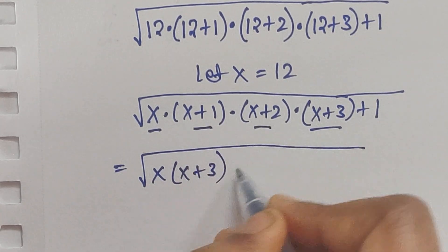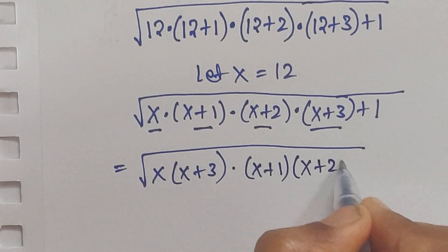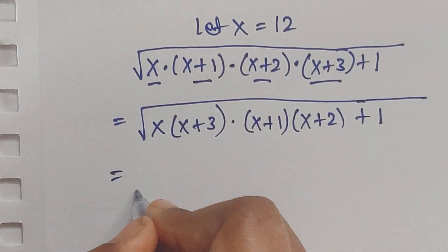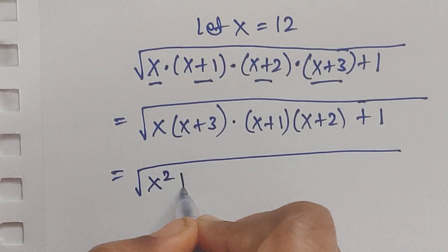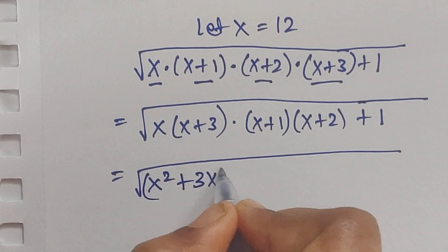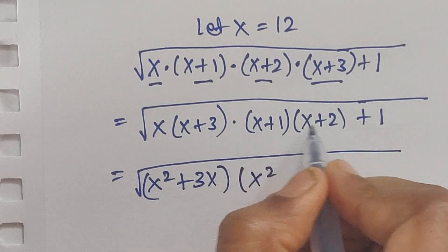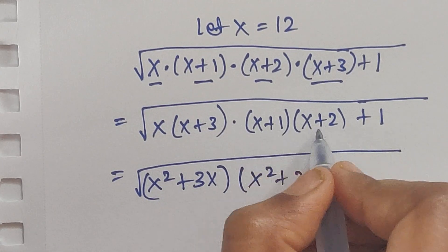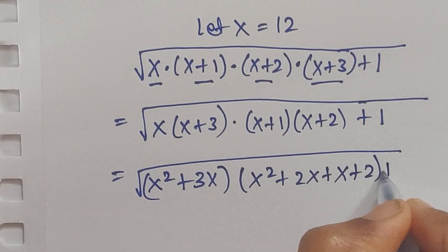Now first multiply the outer terms x times (x plus 3), then multiply the middle terms (x plus 1) times (x plus 2) plus 1. So x times (x plus 3) gives x² plus 3x, and (x plus 1) times (x plus 2) gives x² plus 2x plus x plus 2.